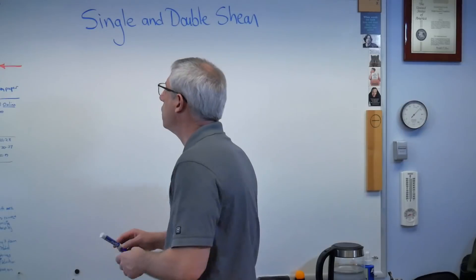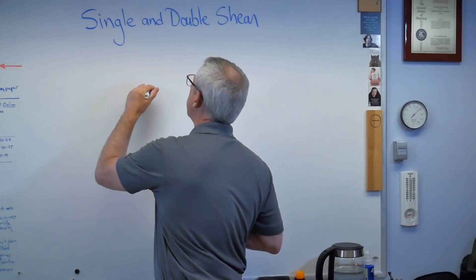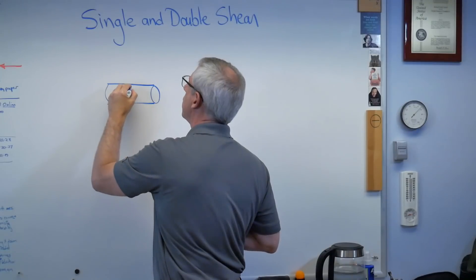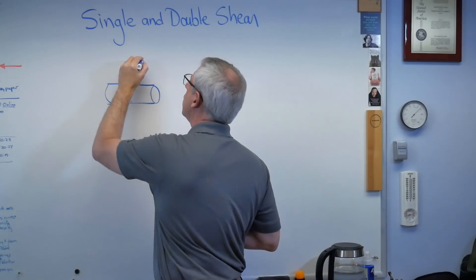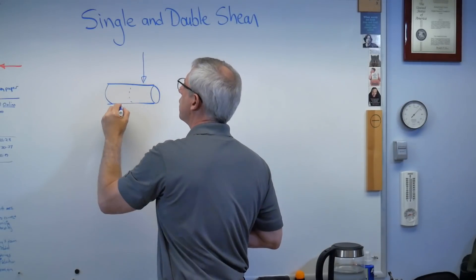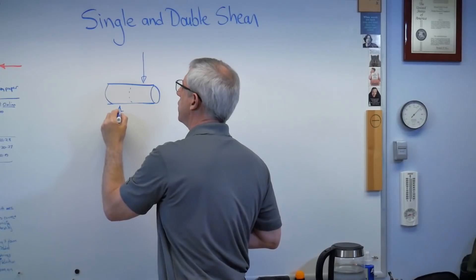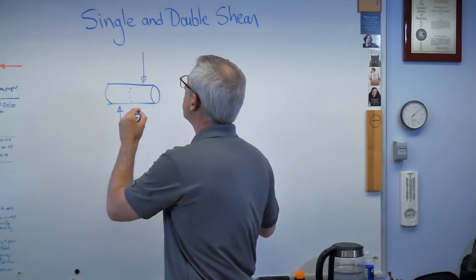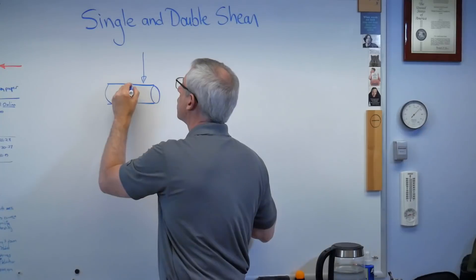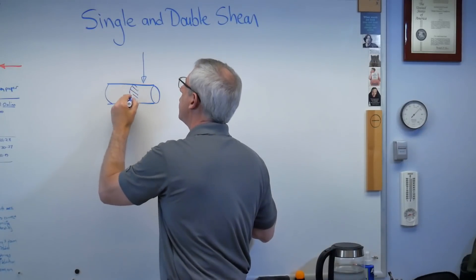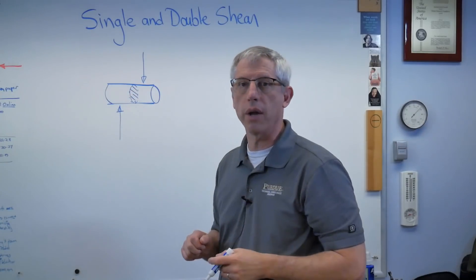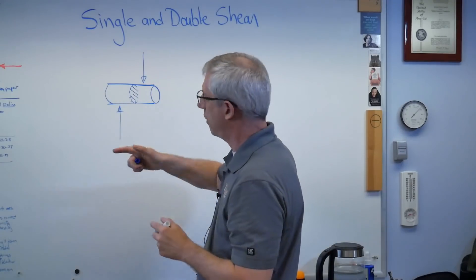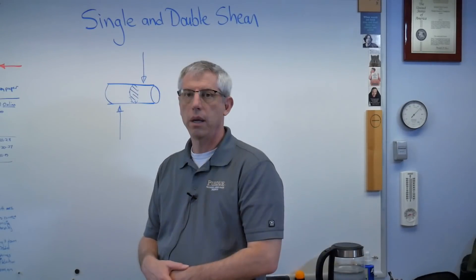If you have a pin like this, or a bolt maybe, and you have a force on one side and a force on the other, that's called single shear. The reason it's called single shear is that there's only one shear area — the area that divides one side from the other.